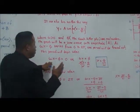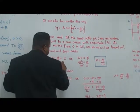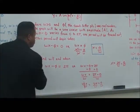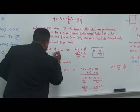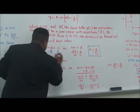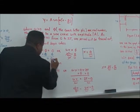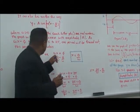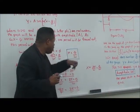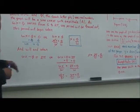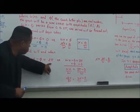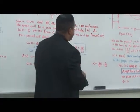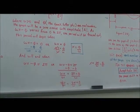This period will begin when ωx minus φ equals 0. We add φ to both sides and divide by ω, getting x equals φ/ω. It will end when ωx minus φ equals 2π — solving similarly gives x equals 2π/ω plus φ/ω.